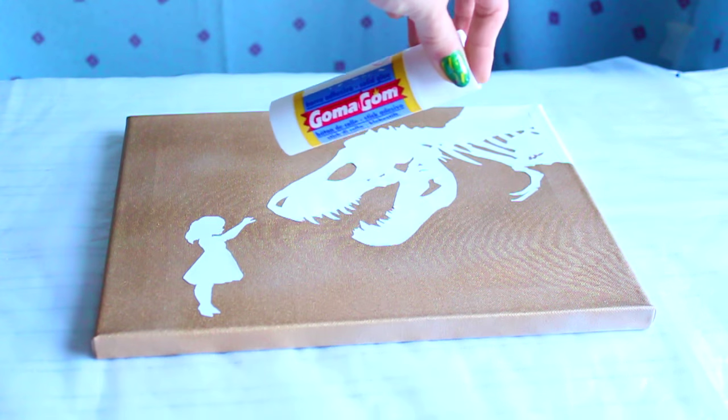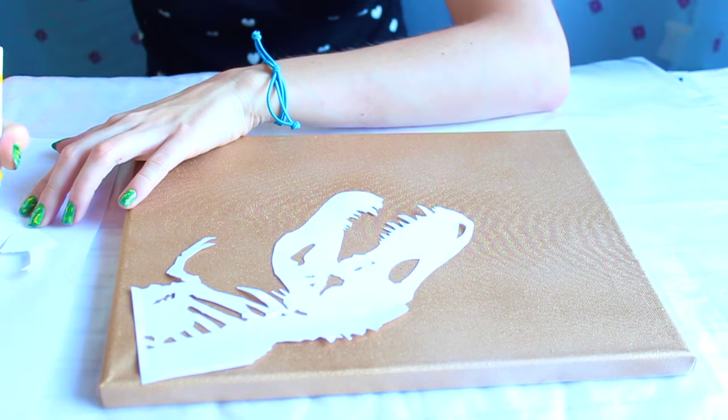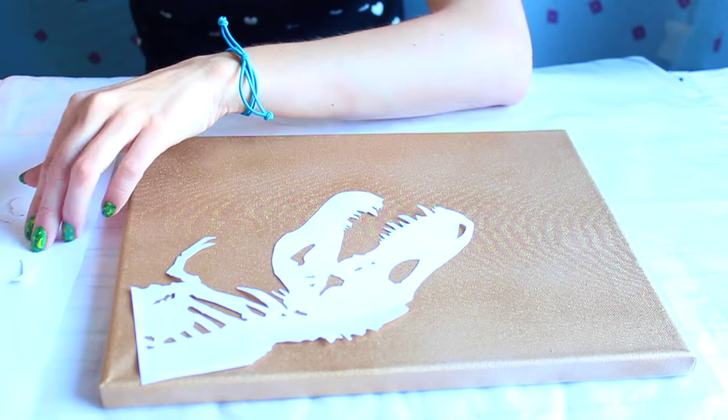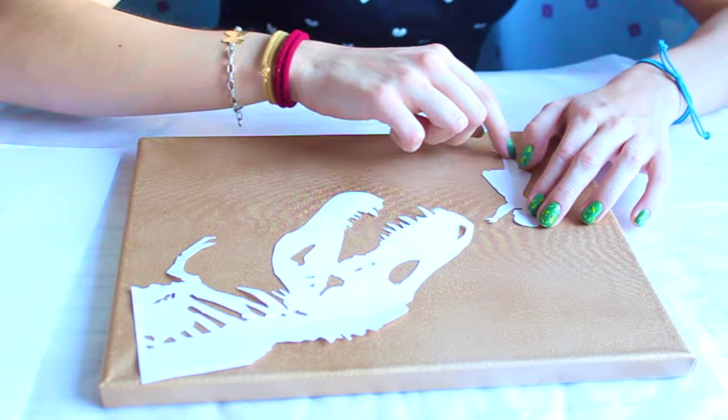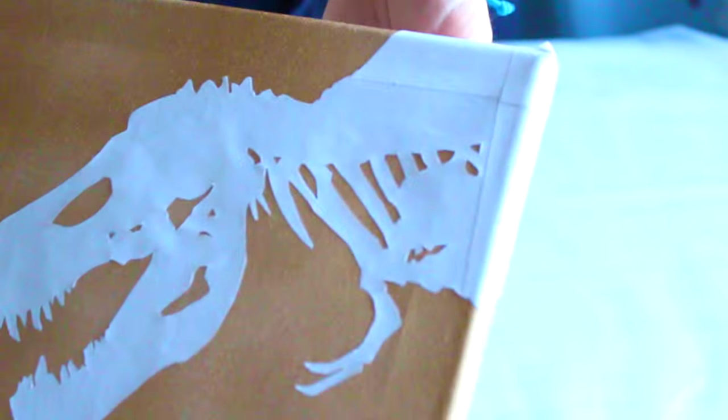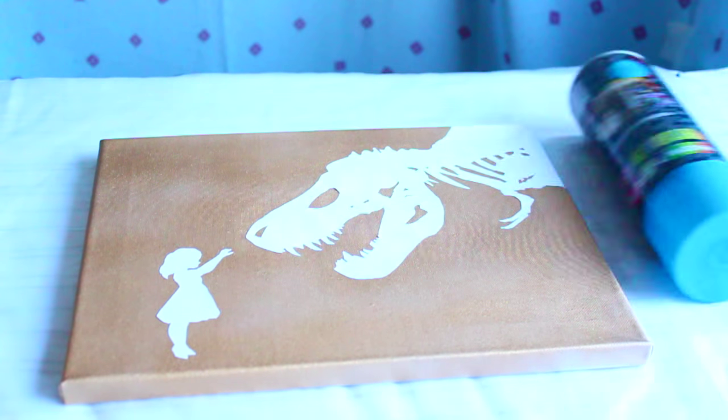Once it's completely dry, with our glue, we're going to glue the shapes, but we want it to be completely glued, especially at the edges, so be generous with the glue in that part. Now that you have everything glued down, we're going to give a coat with the second color all over the canvas, and again, let it dry really well.